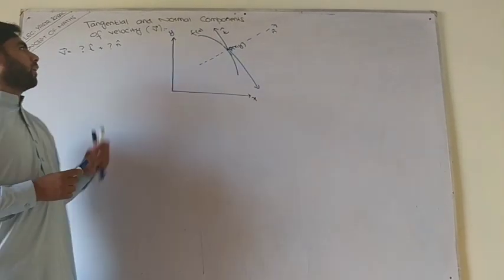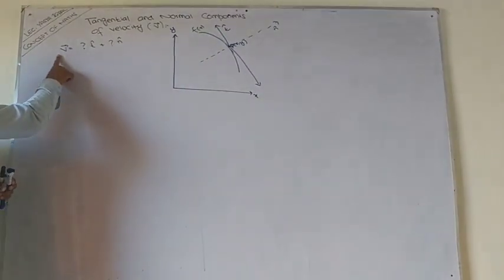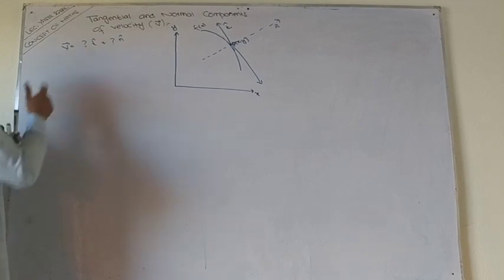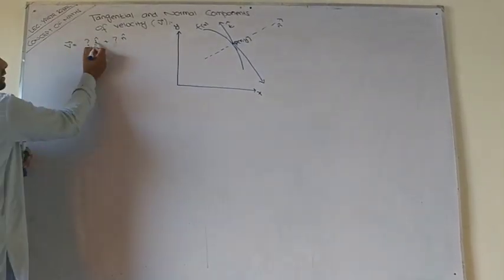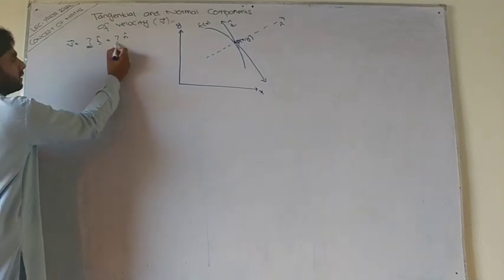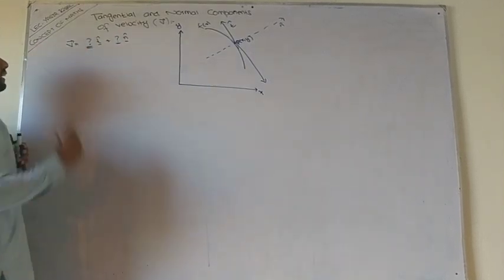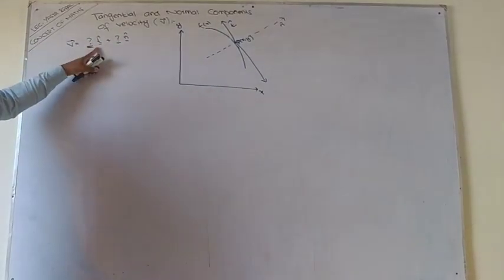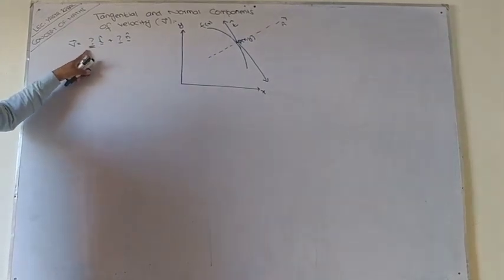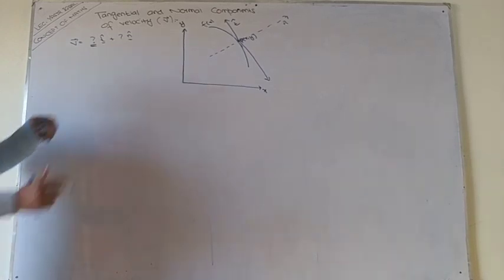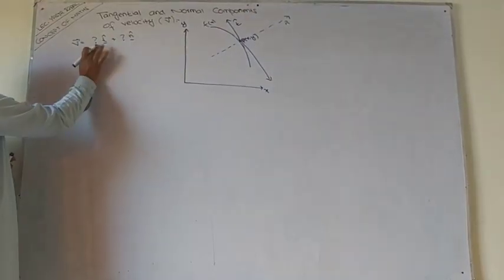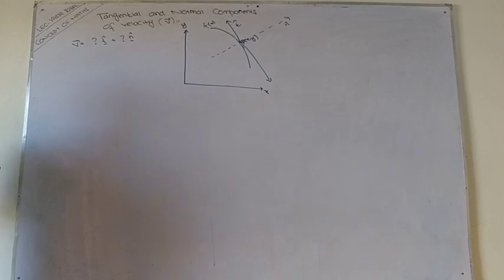Now we talk about the tangential and normal component, so V vector is equal to how much along this direction, the magnitude times direction. This is our target.